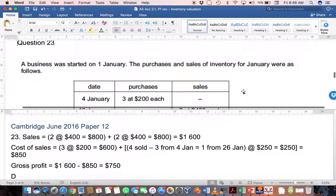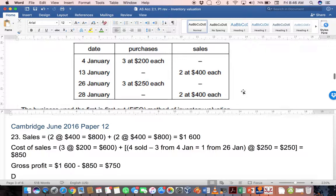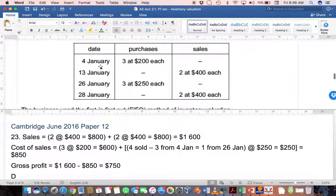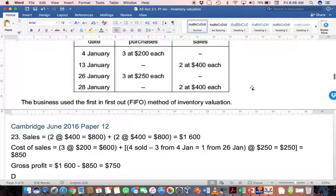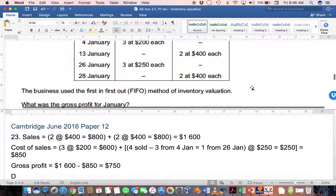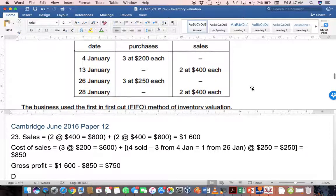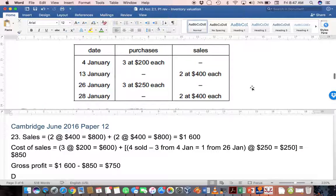Cambridge June 2016 paper 12, question 23. A business was started on 1st January. The purchases and sales for inventory for January were as follows. Here again you can see we bought some stock on the 4th of January, then sold some stock, bought some stock, sold some stock. Are you starting to see some patterns of how to use this? The business uses FIFO. The question asks what the gross profit was. This is very similar to one of the other questions.